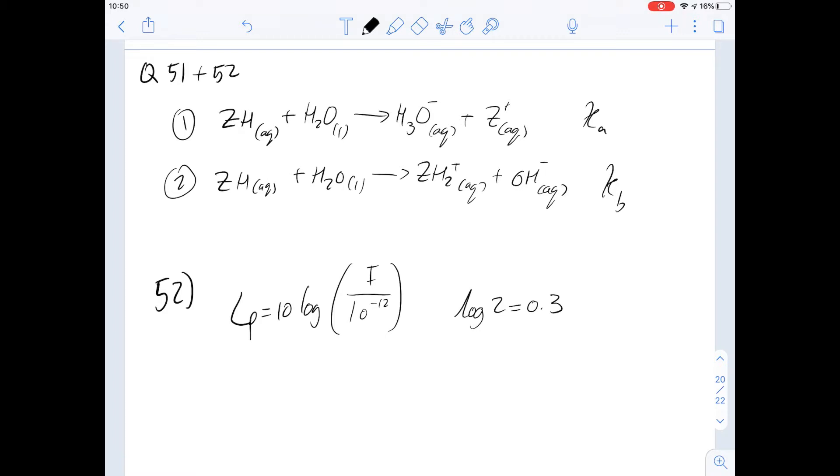So 51 says the stronger a base, the what? A says smaller its pKb value and the larger its pKa value of its conjugate acid.